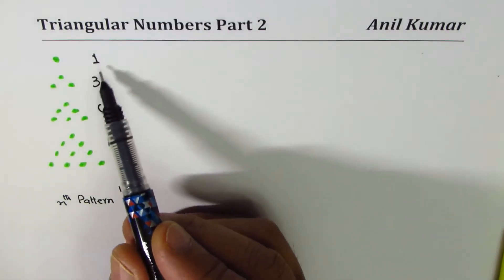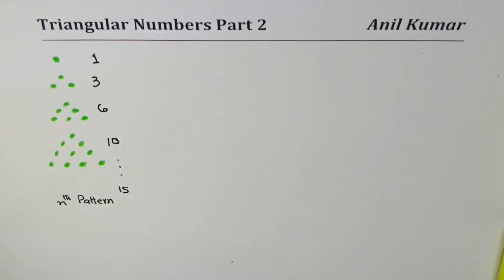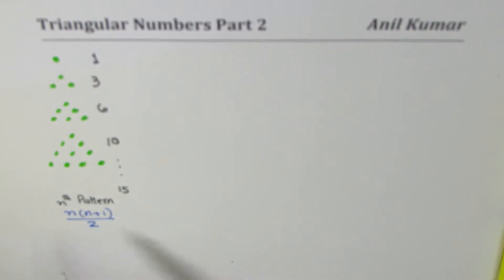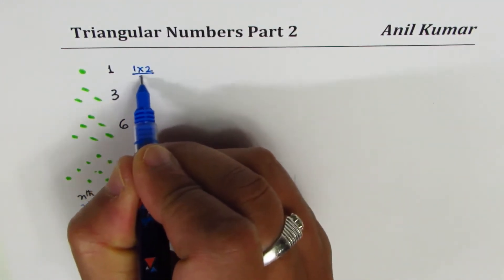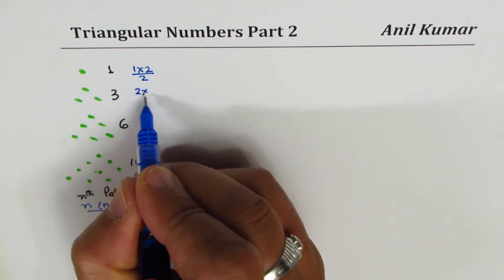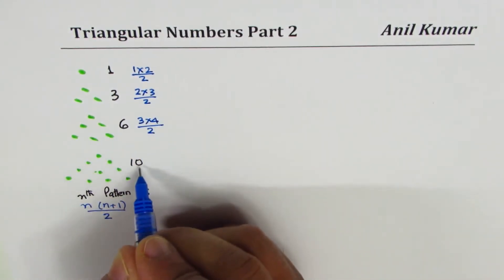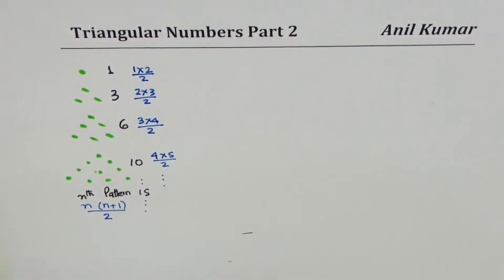You can see that as you move, the dots increase faster. In our part one, we figured it out that the formula which could give you the number of dots in nth pattern is n times n plus 1 divide by 2. You can verify this formula and check. For example, in the first one, it's 1 times 2 divide by 2. In the second, it's 2 times 3 divide by 2, and so on.